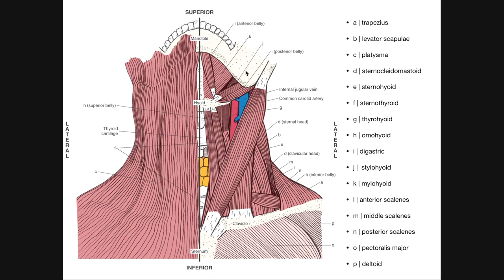Letter J is stylohyoid — it attaches superiorly on the styloid process, and its inferior attachment is the hyoid bone. So it originates on the styloid process and inserts on the hyoid bone. Letter K is mylohyoid — a broader muscle directly deep to the digastric, and broader than any of the other suprahyoid muscles.